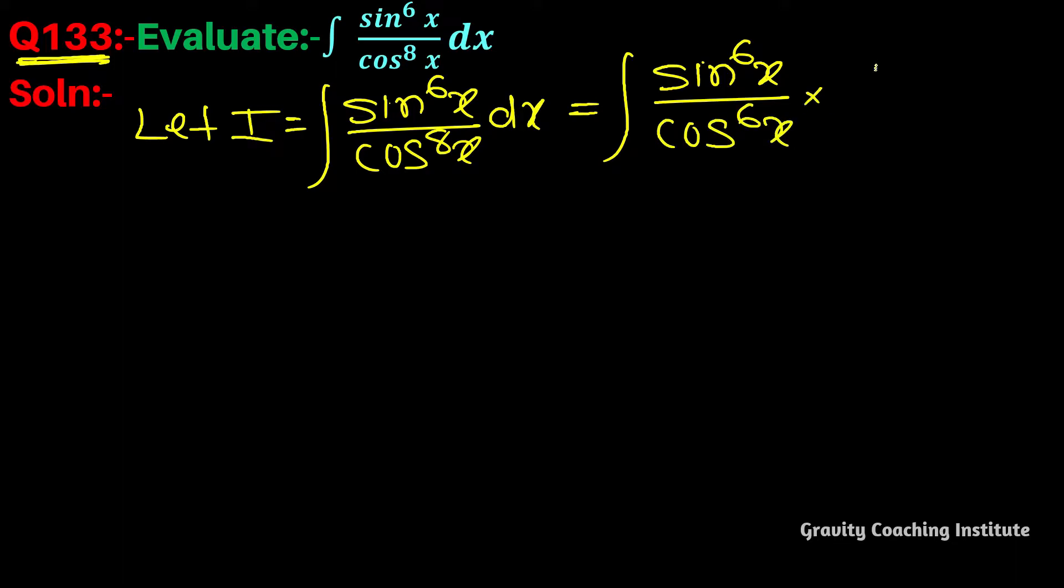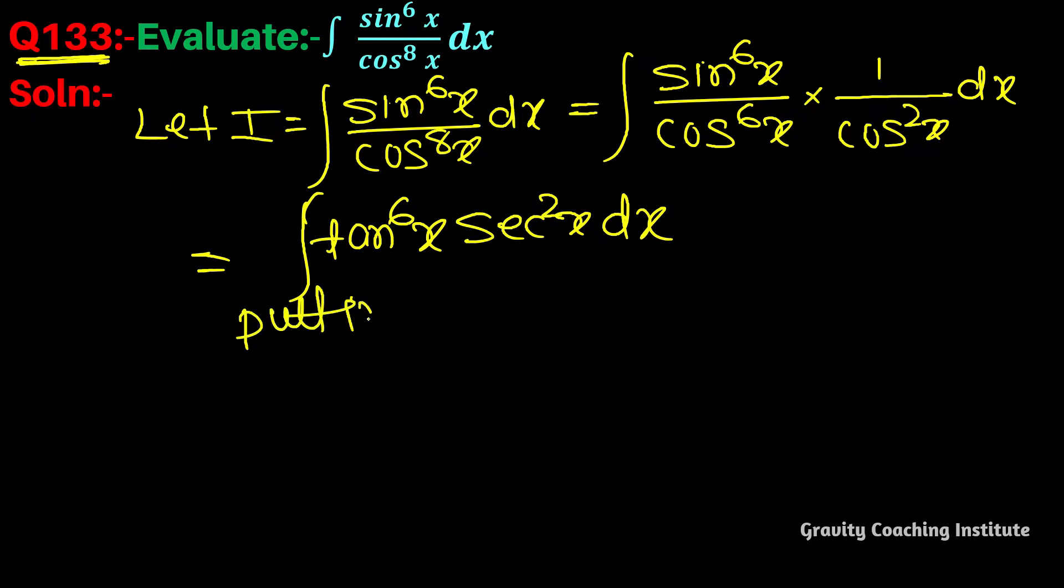This can be rewritten as sin power 6x upon cos power 6x into 1 by cos square x dx, equal to integration tan power 6x sec square x dx. Now we substitute tan x if we differentiate.